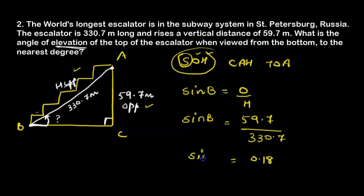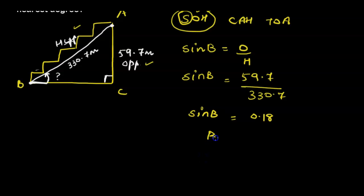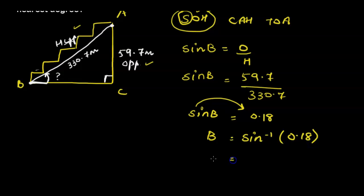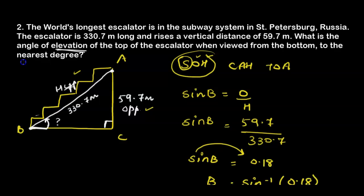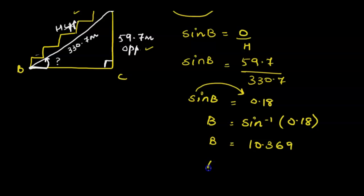So 0.18 = sin B. Since we are looking for angle B, we move sine to the other side: B = sin⁻¹(0.18). Putting second function with sine and this number on the calculator gives angle B = 10.369°. Since we need to round to the nearest degree, the answer is 10 degrees.